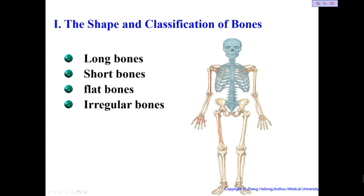The second type is the short bone. In our wrist there are many small bones — these are short bones. The third type is the flat bone — for example, the scapula on the back, or some bones of the skull, are flat bones. The fourth type is the irregular bone — bones that are not long, not short, not flat, but irregular in shape. Examples are the vertebrae and the hip bone.